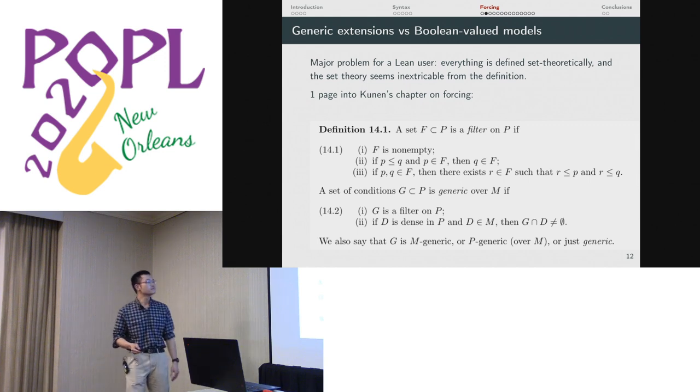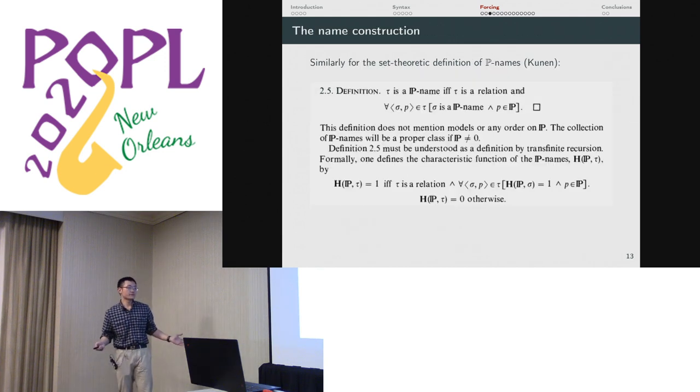If M is already a type, then this means that you would be looking at terms inside of M that you think of as sets. But that means you have to internalize the forcing argument to M. That's something you might not want to do because you want to make proofs as easy as possible. You don't want to fight the type system. Similar way for P names. Kunen claims that this must be understood by transfinite recursion, which is like, yikes. Because when you're working inside a type theory, you don't really want to do transfinite stuff. You want to work with inductive types instead.